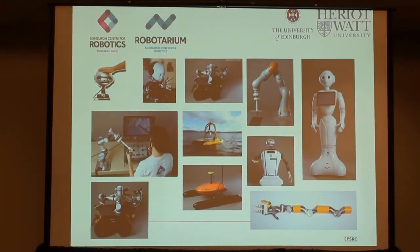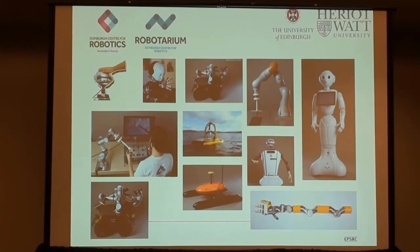The University of Edinburgh has a Scottish National Robotic Center. You can see the logo here—it's actually a linkage structure. They use linkage as a logo of the system. Robotics are dominated by computer science, control, and electrical engineering. Many advanced robots mainly include control and system integration.